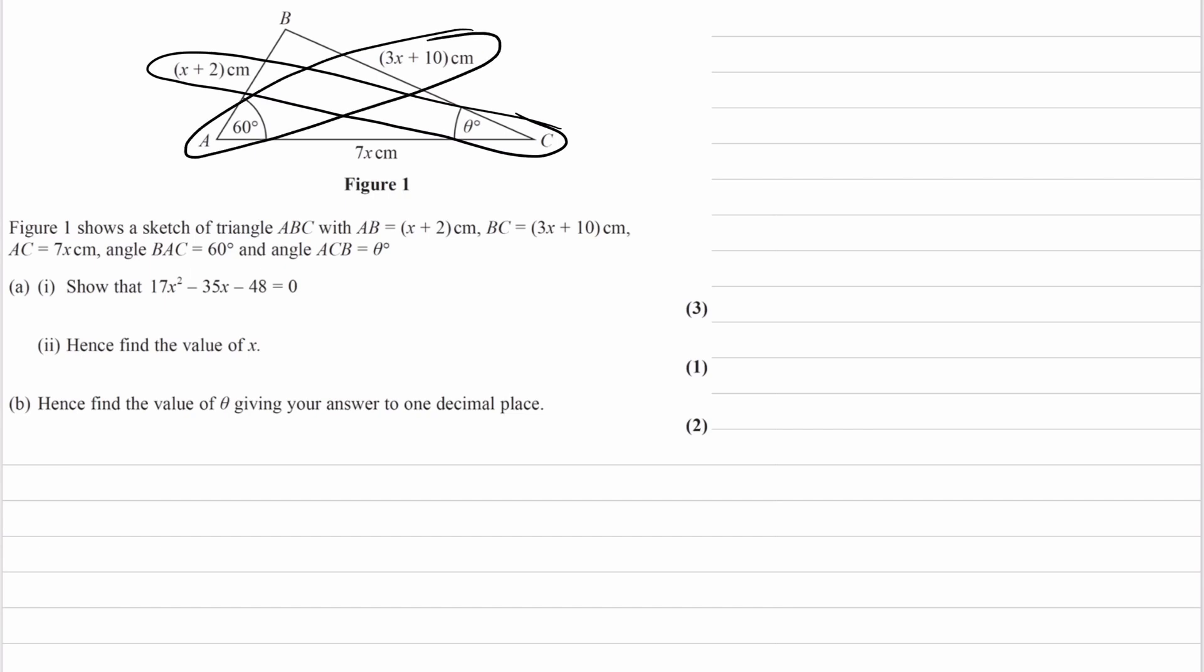So if we use the sine rule, then we will end up getting theta in our equation. We don't have theta here. So that suggests to me that we're not going to be using the sine rule here, at least not to start with, but we're going to be instead using the cosine rule.